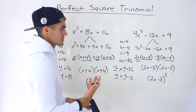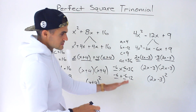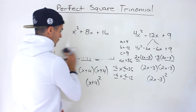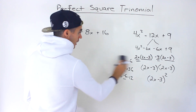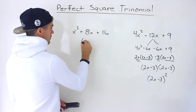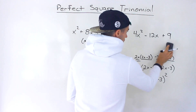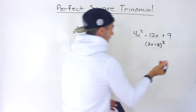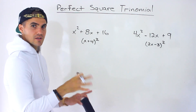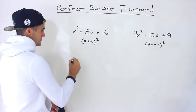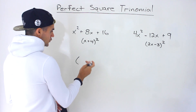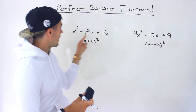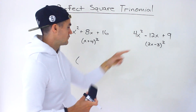Those are two examples of perfect square trinomials. You can always factor these with decomposition — you already have enough tools to factor them the same way we've been factoring other quadratics. However, teachers and textbooks sometimes expect you to use specific formulas for this, similar to the difference of squares. There are two cases: either the middle term is positive or negative.